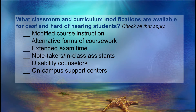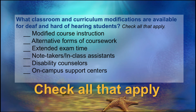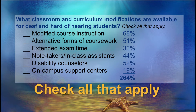In this question, we ask: at your school, what sorts of curriculum modifications are available for the deaf and hard of hearing students? We add the caveat: check all that apply. A given respondent may check all of the options, or only some, or none. Perhaps 68% of schools offer modified course instruction, 51% offer alternative forms of coursework, 30% offer extended exam time — and now we're way over 100%. So how can we display these findings in a way that makes sense of the data?